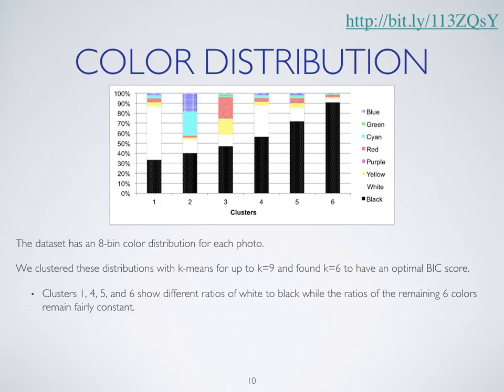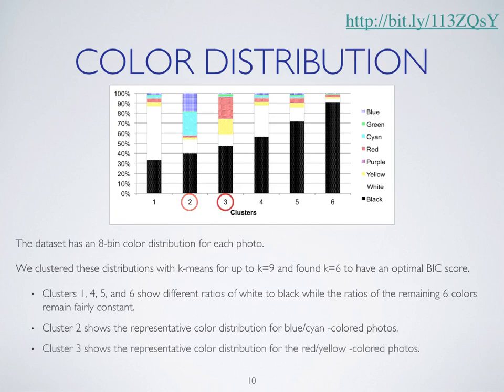If we analyze the color distribution of the dataset, we can see that clusters 1, 4, 5, and 6 show different types of ratios of black and white, while the ratio of the remaining 6 colors is fairly constant. Cluster 2 represents the color distribution mostly for blue and cyan colored photographs — perhaps photographs of sky or sea. Cluster 3, on the other hand, shows the representative color distribution for red and yellow photographs.